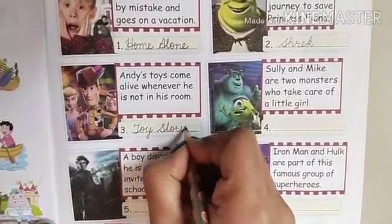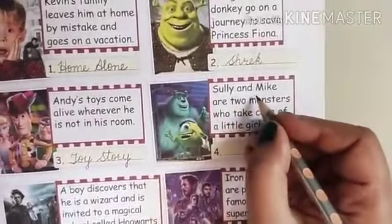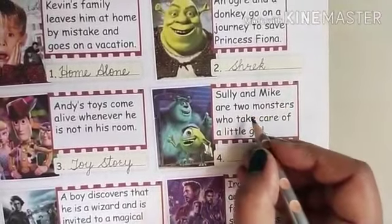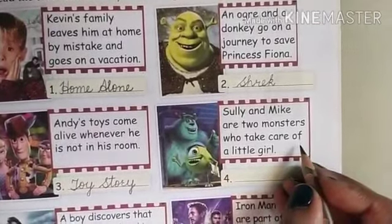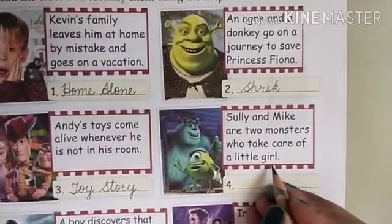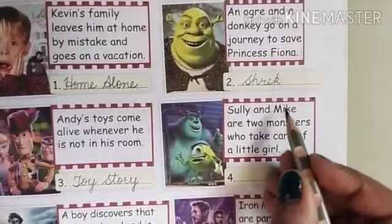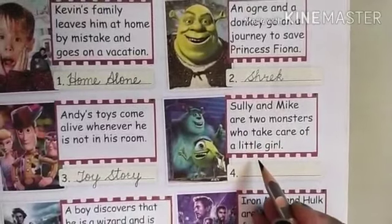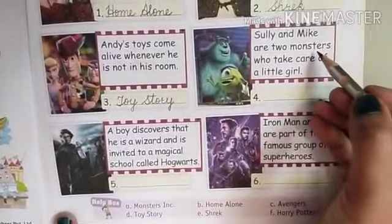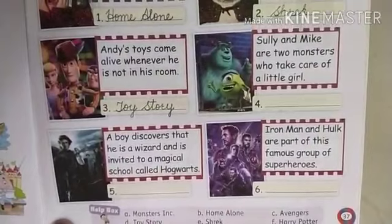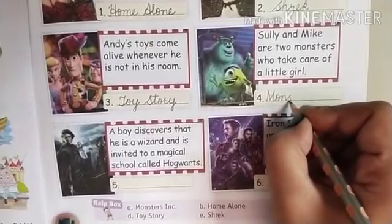Fourth clue: Sulley and Mike are two monsters who take care of a little girl. This movie is about two monsters named Sulley and Mike who take care of a little girl. The name of the movie is Monsters Inc. We write Monsters Inc here.